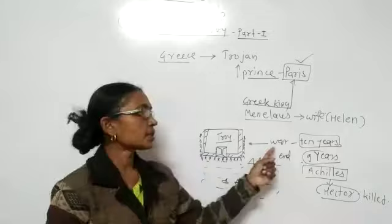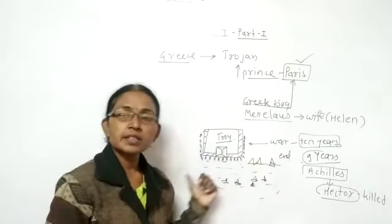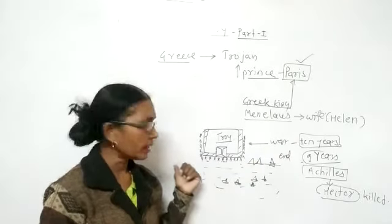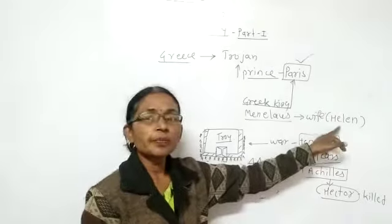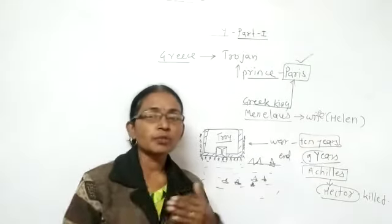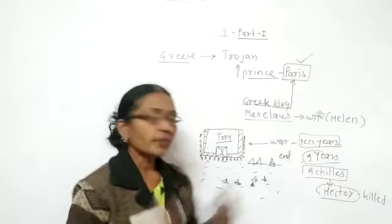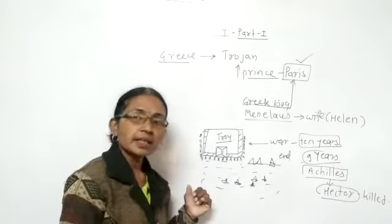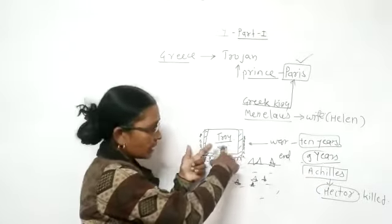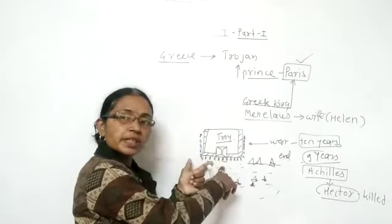So there was war. This war started only because of Helen, and it continued for nearly 10 years. Every day when the sun rose, the Trojan soldiers came out of the gate.